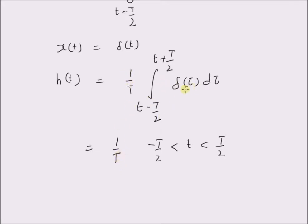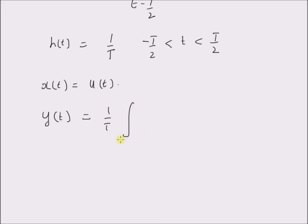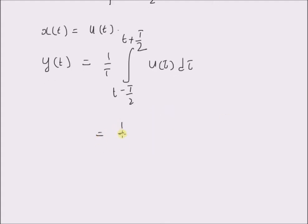We have 1/T and the value is only non-zero within the interval minus T/2 to plus T/2. So this is the impulse response h(t), which is basically a constant within the interval minus T/2 to plus T/2. Now, let us look at the output when x(t), the input, is equal to a unit step signal u(t). By the definition of the system equation, y(t) is equal to 1/T times T, which is 1.